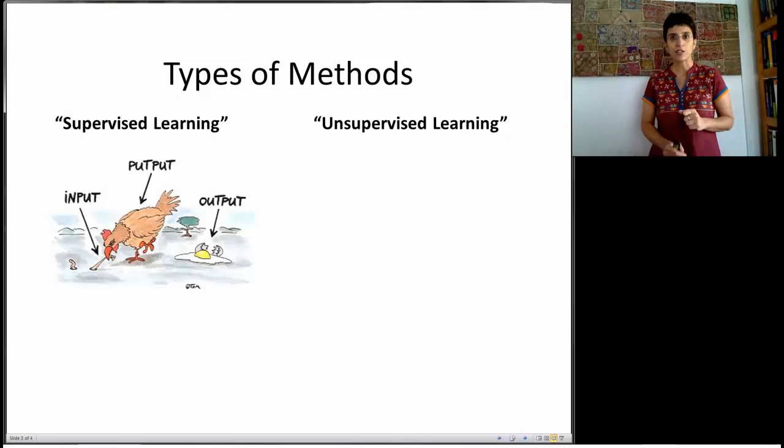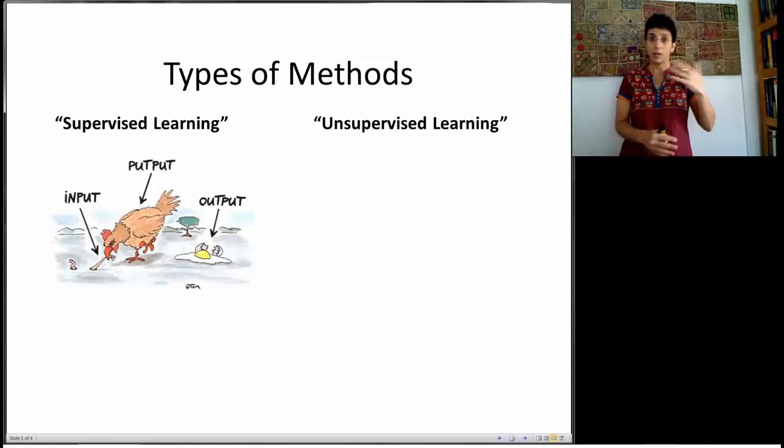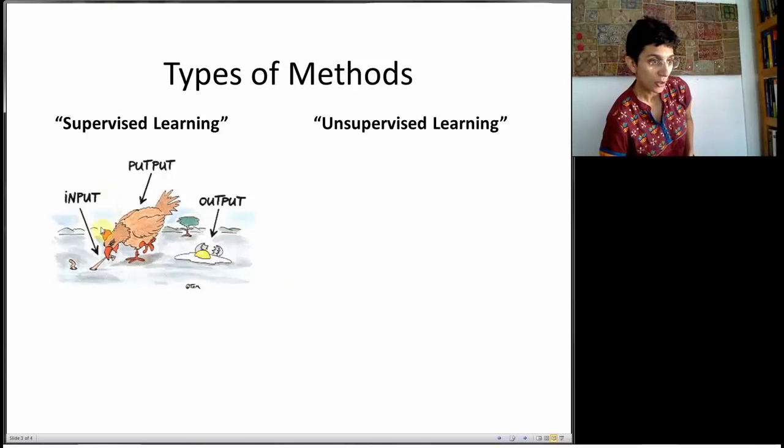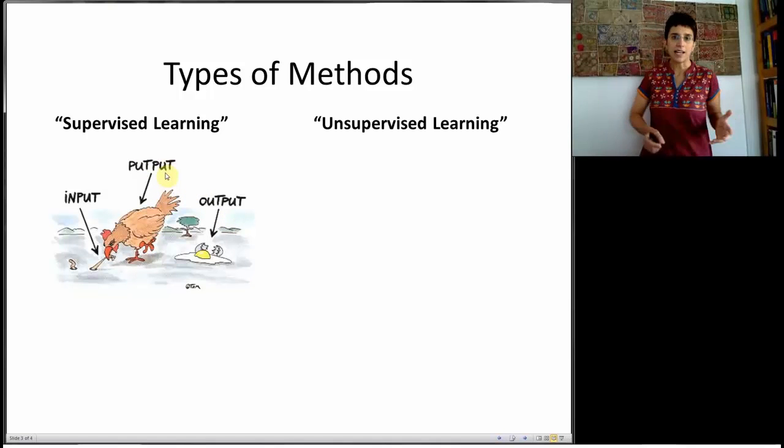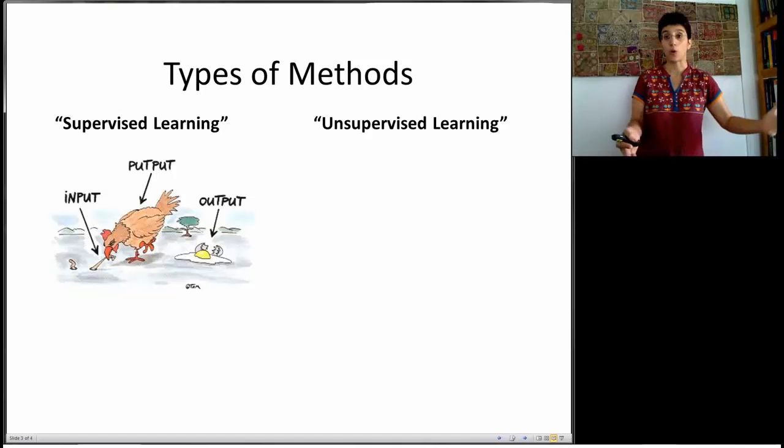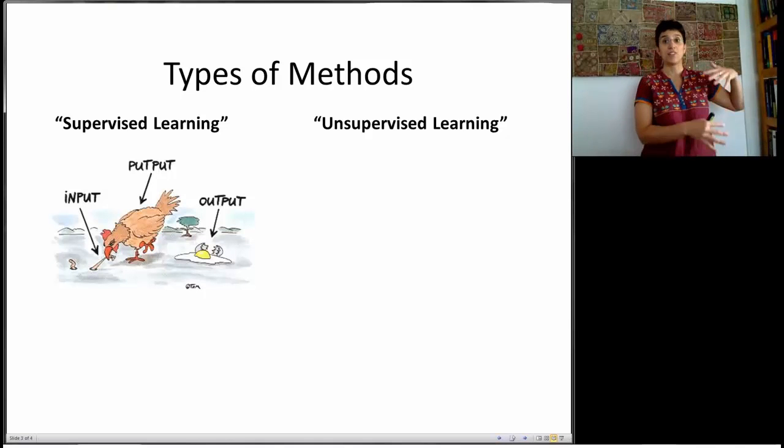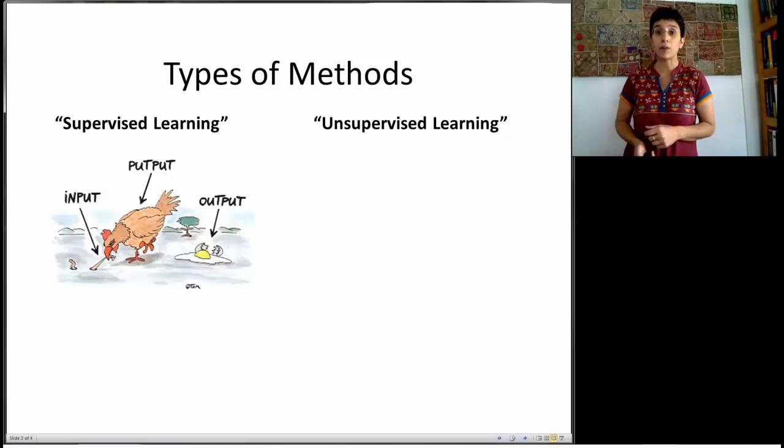In supervised learning, we take the measurements that we have on multiple records, and we divide them into inputs and outputs. Similar to this little picture where we have the inputs, the worms, and the outputs, which is the egg. Obviously, there's a small joke hiding here in the middle. And the idea is that given a set of inputs, we want to predict a certain output. For example, we might want to look at your performance in the program, and your past experience, and your demographics, and use that to try and predict some output.